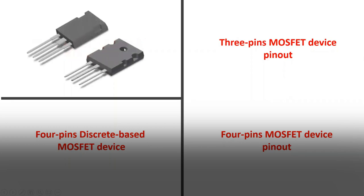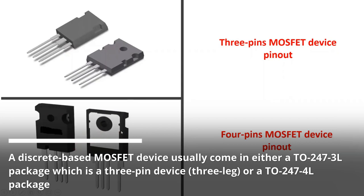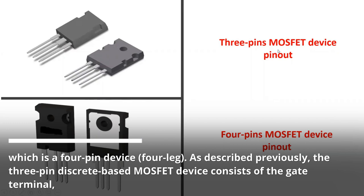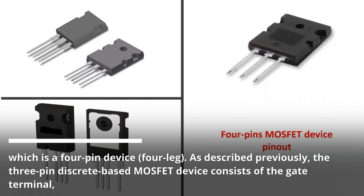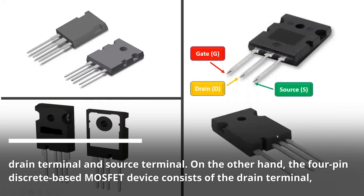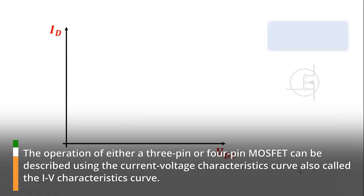A discrete-based MOSFET device usually comes in either an A2247-3L package which is a three-pin device, three-leg, or an A2247-4L package which is a four-pin device, four-leg. The three-pin discrete-based MOSFET device consists of the gate terminal, drain terminal, and source terminal. The four-pin discrete-based MOSFET device consists of the drain terminal, power source terminal, driver source terminal, and gate terminal. The operation of either a three-pin or four-pin MOSFET can be described using the current voltage characteristics curve, also called the IV characteristics curve.